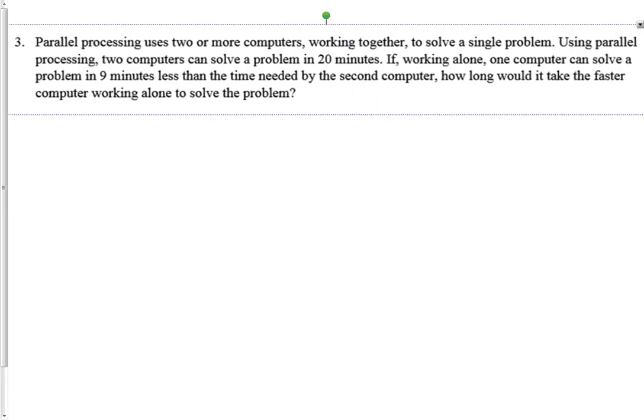Let's go on to the next one. In this one we've got parallel processing, which uses two or more computers working together to solve a single problem. Using parallel processing, two computers can solve a problem in twenty minutes — that's the together amount. If working alone, one computer can solve a problem in nine minutes less than the time needed by the second computer. We want to know how long it would take the faster computer working alone. I'll call them F for the fast computer, S for the slow computer, and T for together.